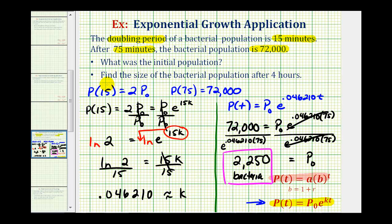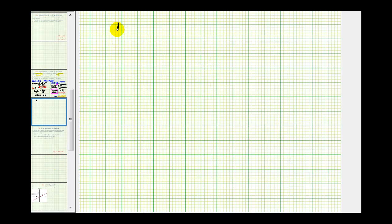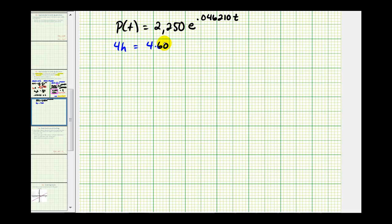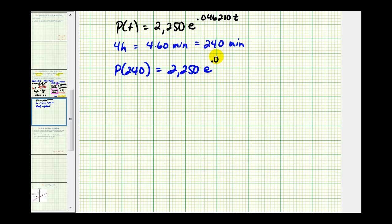This also gives us the information to determine the population size after four hours, because now we can substitute 2250 for p sub zero. We have p of t equals 2250 times e raised to the power of 0.046210 times t. We have to remember that t is in minutes and four hours equals 4 times 60 minutes, or 240 minutes. So to determine the population after four hours we need to find p of 240, and now we go back to the calculator.